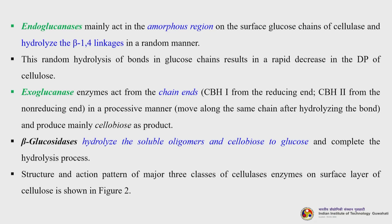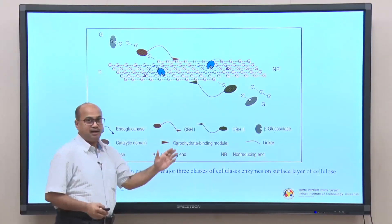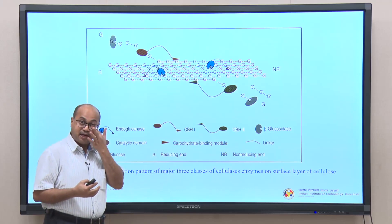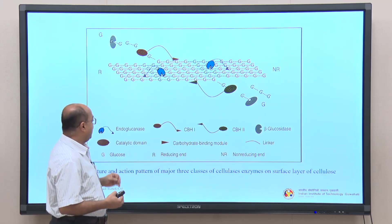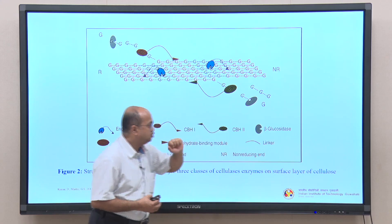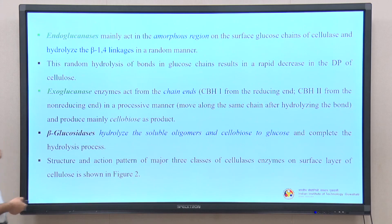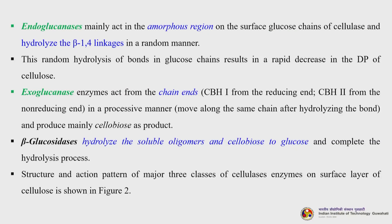Endoglucanases mainly act in the amorphous region on the surface glucose chains of cellulose and hydrolyze the beta-1,4 linkages in a random manner. As shown in the schematic, endoglucanase works on the amorphous region represented by black lines. This random hydrolysis of bonds in the glucose chain results in a rapid decrease in the degree of polymerization of cellulose.